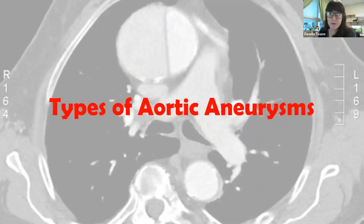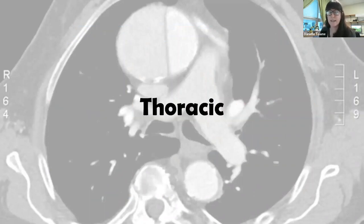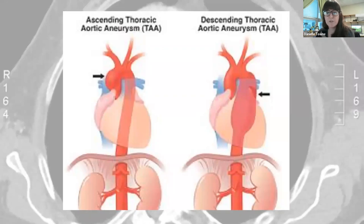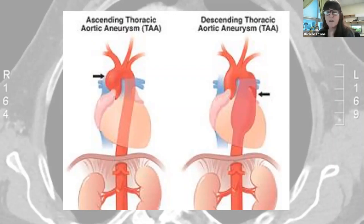There are two different places that aneurysms can occur. A thoracic aneurysm occurs along any portion of the aorta that passes through the chest cavity — starting at the heart all the way through. It's a less common type of aneurysm. As the thoracic aortic aneurysm grows, patients may report tenderness in their chest, back pain, hoarseness, cough, or shortness of breath. Anything in the thoracic area is above the diaphragm in that thoracic space.